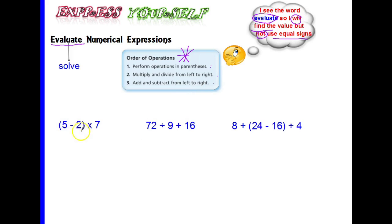So let's look at 5 minus 2 times 7. Since 5 minus 2 is in parentheses, I need to do that first. So that would be 3. Keep my multiplication sign and my 7. And I multiply 3 times 7 is 21. Notice that I kept everything linear. It means everything is in line right on top of each other and there are no equal signs.